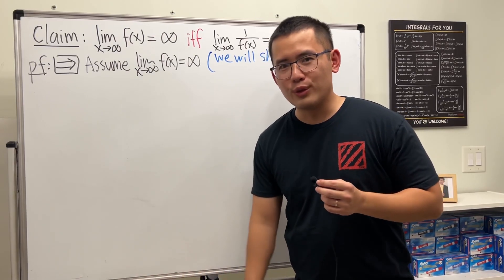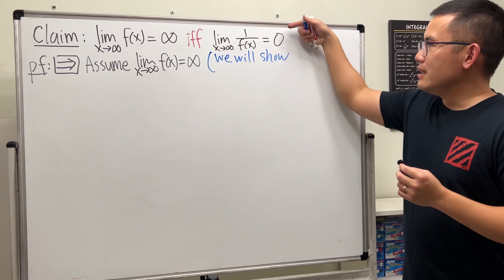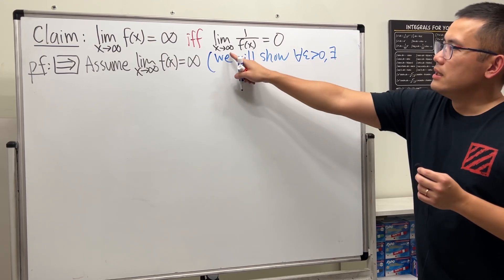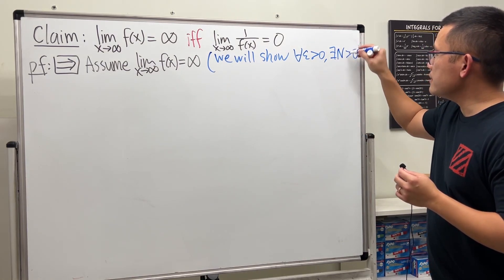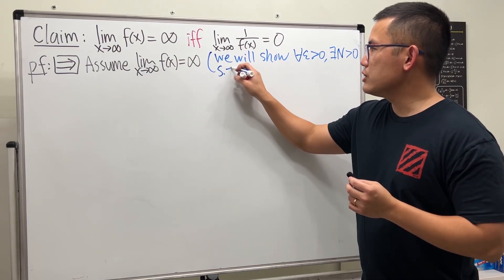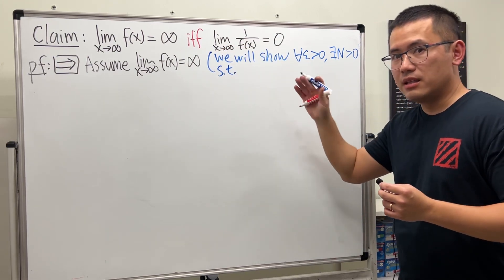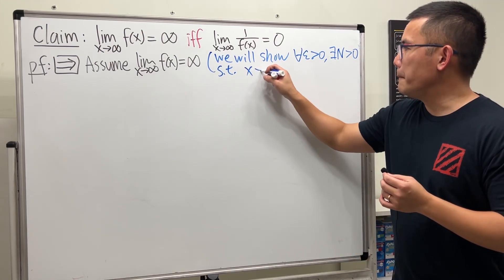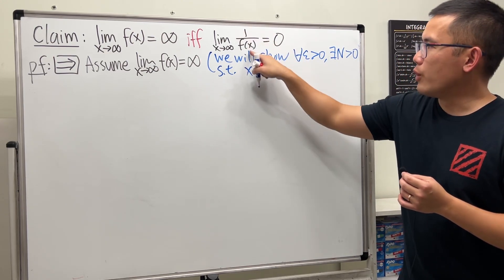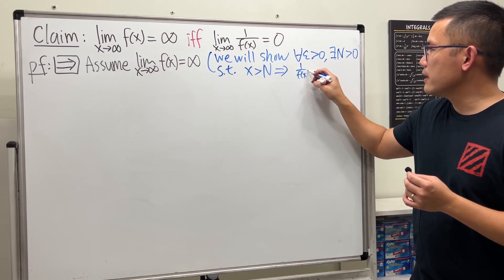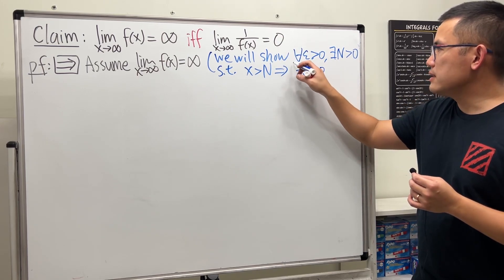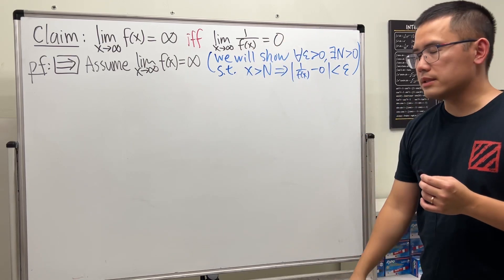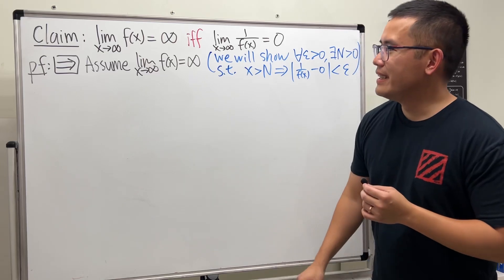We'll use the rigorous definition of a limit. Since the limit is zero, which is finite, we use epsilon. We must show: for all epsilon greater than zero, there exists a capital N greater than zero such that if x is greater than N — meaning x is getting bigger and bigger — then the distance between 1 over f(x) and the limit zero, written as the absolute value of 1 over f(x) minus zero, is less than epsilon.